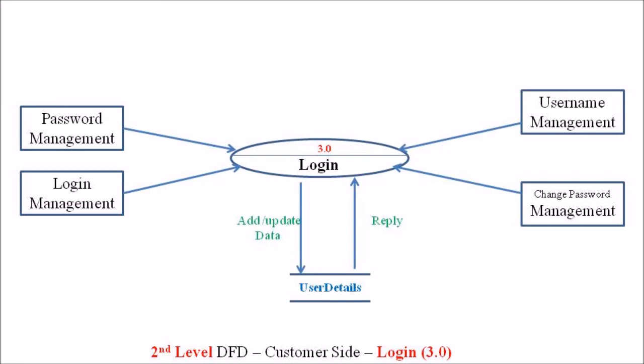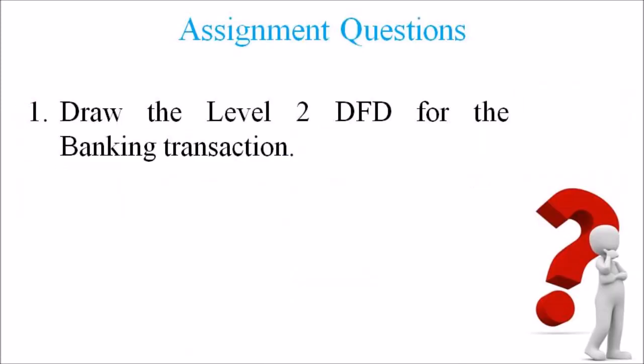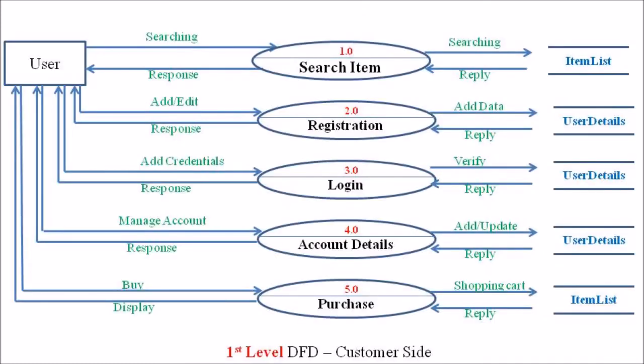This is how we represent data flow diagrams for every process. Hope you have understood this topic. Kindly go through the assignment question — draw the level 2 DFD for a banking transaction. In the upcoming lecture, we will be discussing process number 4, that is the account detail process data flow diagram at level 2.